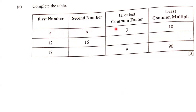They're telling us that the greatest common factor of six and nine is three, and the lowest common multiple of six and nine is 18. So this row is good — we don't need to worry about this row. Next we go on to the next row.